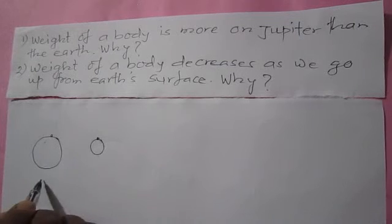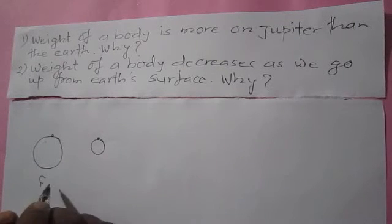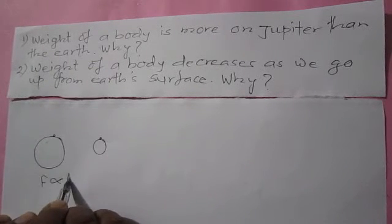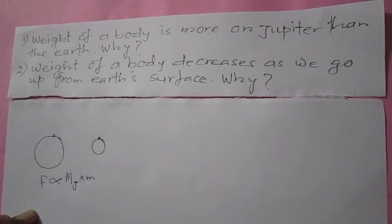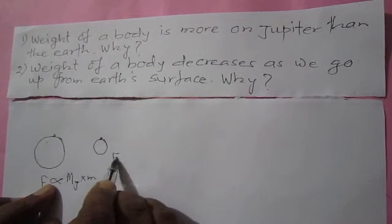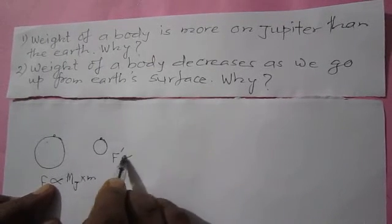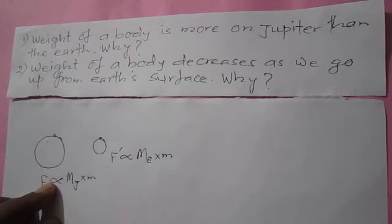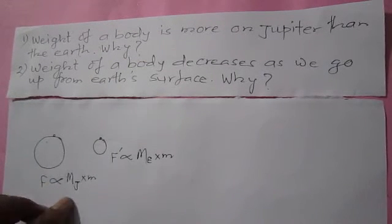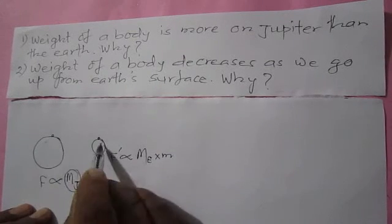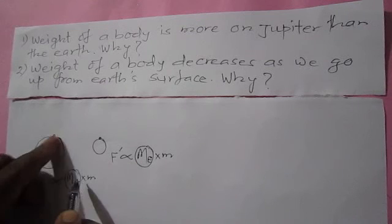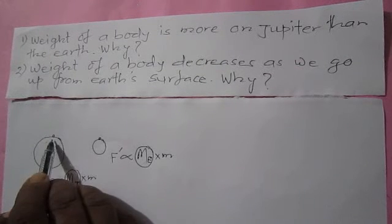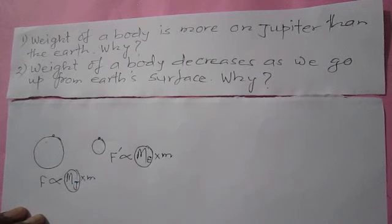According to Newton's law of gravitation, the gravitational force between any two bodies is directly proportional to the product of their masses. On Jupiter, the gravitational force is proportional to the product of the mass of Jupiter and the mass of the body. On Earth, it is proportional to the product of the mass of Earth and the mass of the body. Since the mass of Jupiter is much greater than the mass of Earth, the same body weighs more on Jupiter and less on Earth.